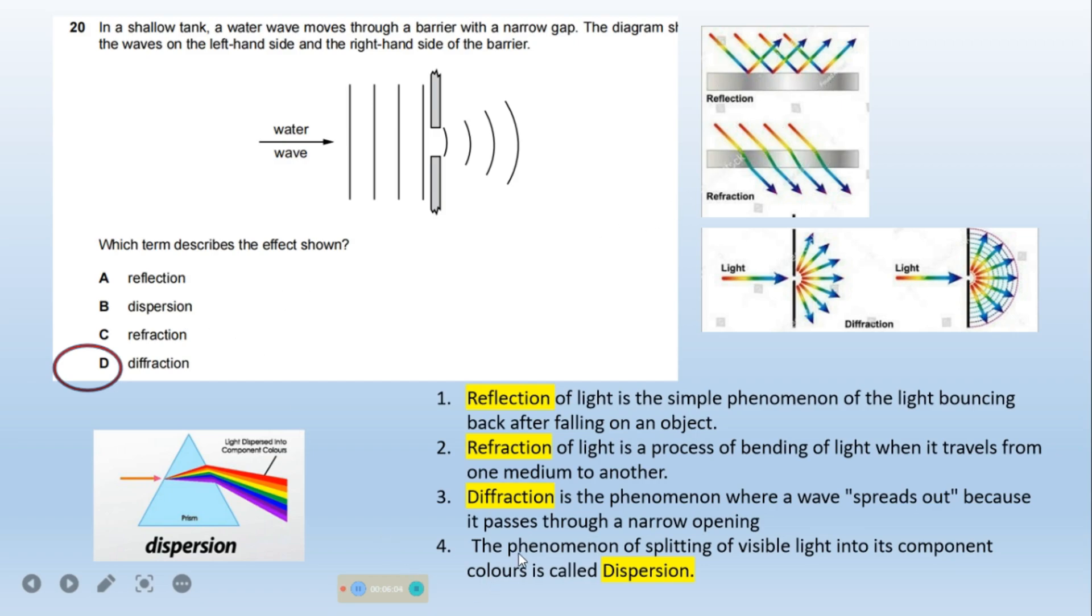Refraction. Refraction of light is a process of bending of light when it travels from one medium to another. And diffraction, option D. Diffraction is a phenomenon where a wave spreads out because it passes through a narrow opening. So this process shows here diffraction. Option D is the correct one.